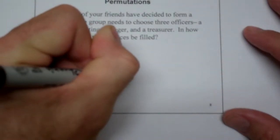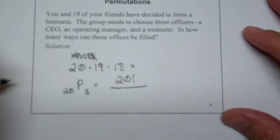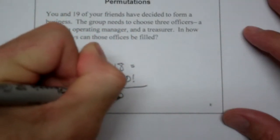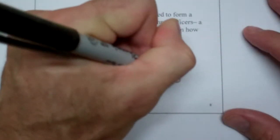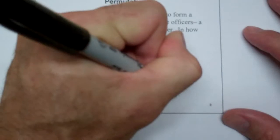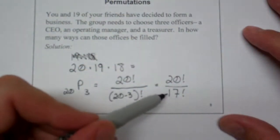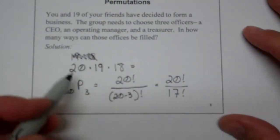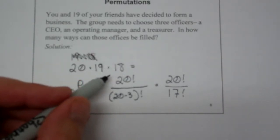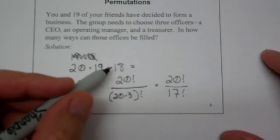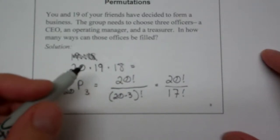And so that's going to give me 20 factorial all over 20 minus 3 factorial, which is going to give me 20 factorial over 17 factorial. And you can see that once you get rid of the 17, all that will be left is the 20, the 19, and the 18. So you plug that into your calculator and you get a wonderful answer.